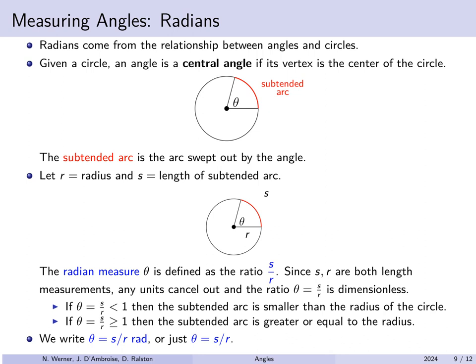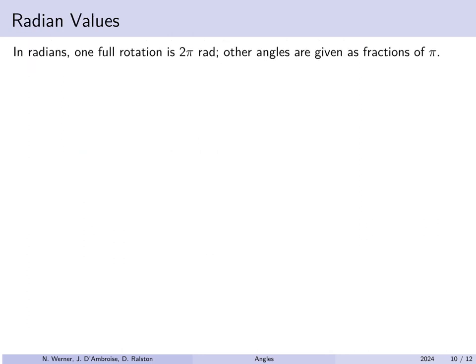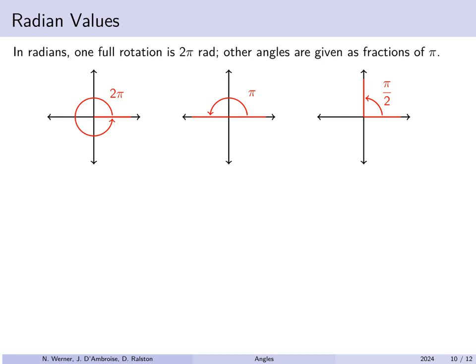How many radians does it take to go all the way around a circle? Going all the way around subtends the entire circumference, so the full circular angle in radians is the ratio of circumference to radius — which is 2π. Pi is the ratio of circumference to diameter, and since the radius is half the diameter, the ratio circumference/radius = 2π. So one full rotation is 2π radians, halfway is π, a quarter of the way is π/2, and so forth.